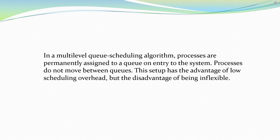In a multi-level queue scheduling algorithm, processes are permanently assigned to a queue on entry to the system. Processes do not move between queues. This setup has the advantage of low scheduling overhead, but the disadvantage of being inflexible.